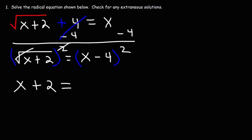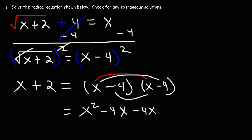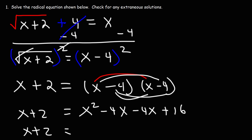On the right side, we have x minus 4 squared, so we need to FOIL. x minus 4 squared is x minus 4 written twice. FOILing gives us: x times x is x squared, x times negative 4 is minus 4x, negative 4 times x is another negative 4x, and negative 4 times negative 4 is positive 16. Combining like terms on the right side, negative 4x plus negative 4x gives us negative 8x.